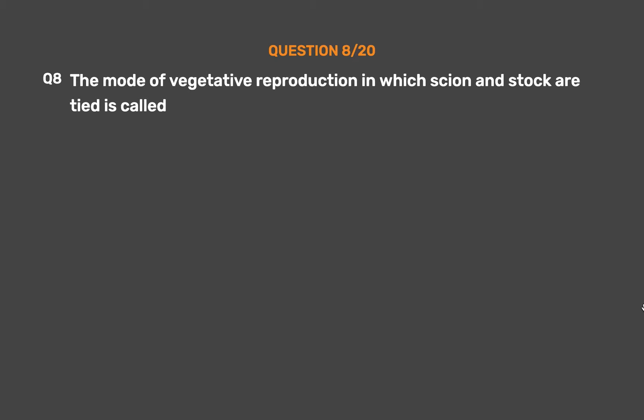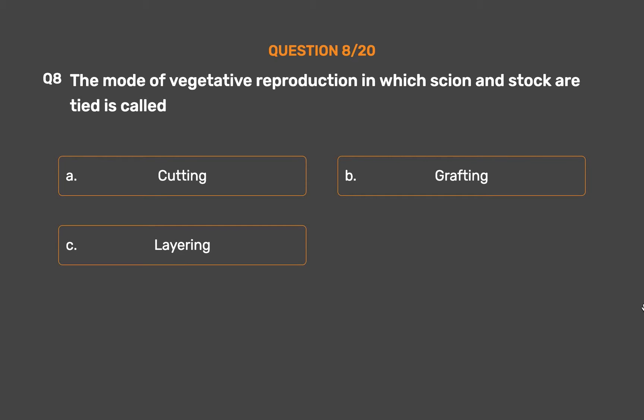Question No. 8. The mode of vegetative reproduction in which a scion and rootstock are tied together is called: Option A – Cutting. Option B – Grafting. Option C – Layering. Option D – Tissue culture.